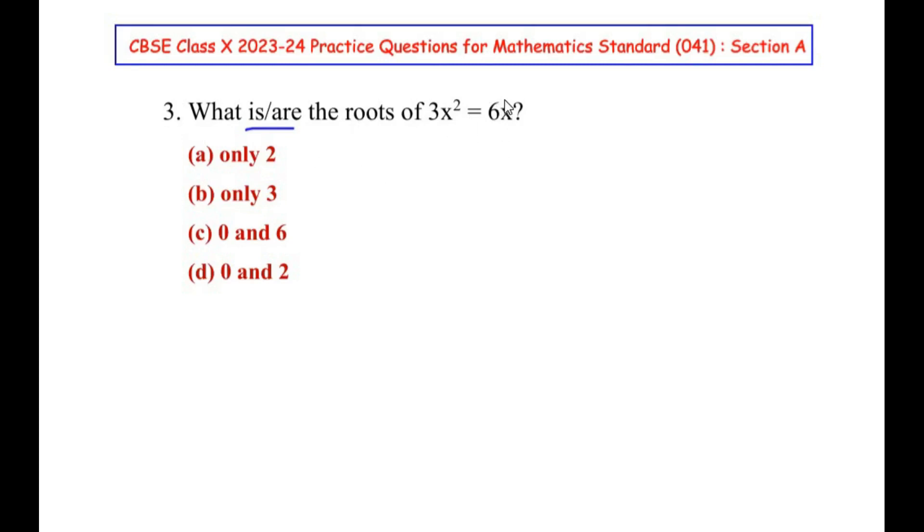Now to solve this, let us take 6x on one side of the equal sign. So we get 3x² - 6x = 0. Since we have taken 6x on this side, we are left with 0 on the other side. Now let us factorize this.